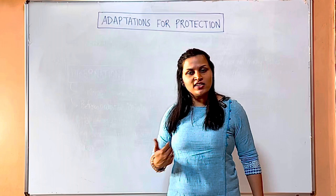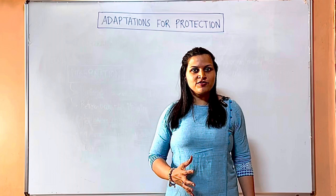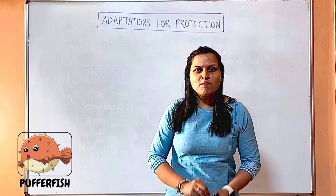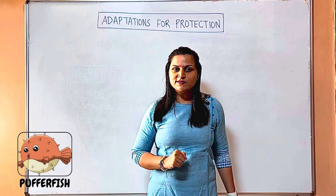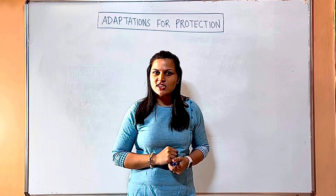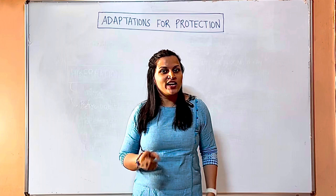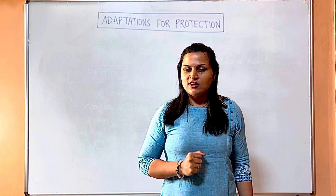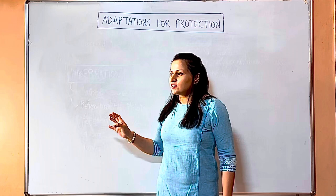Do you know about the puffer fish? It is actually a small, cute little fish, but when an enemy comes it will just puff itself up to a huge size so that the enemy gets scared and stays away, thinking it is a big animal. In reality it is a small fish. One of the most favorite examples is the leaf insect — it looks so similar to a leaf that a predator would not notice it.